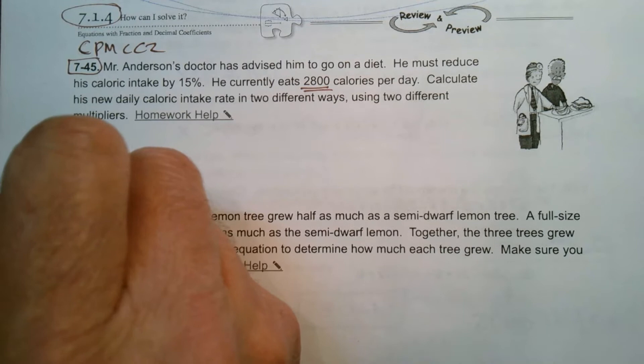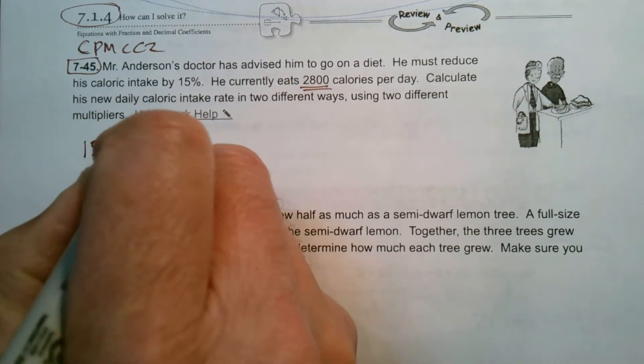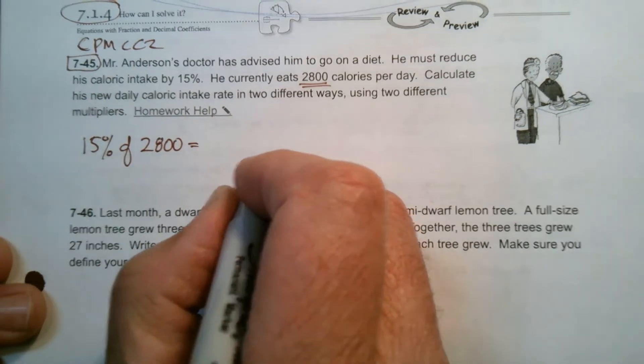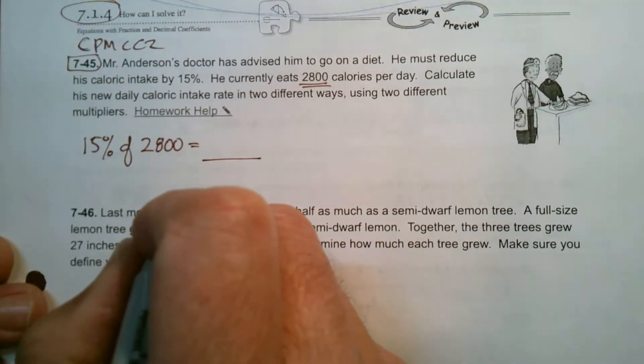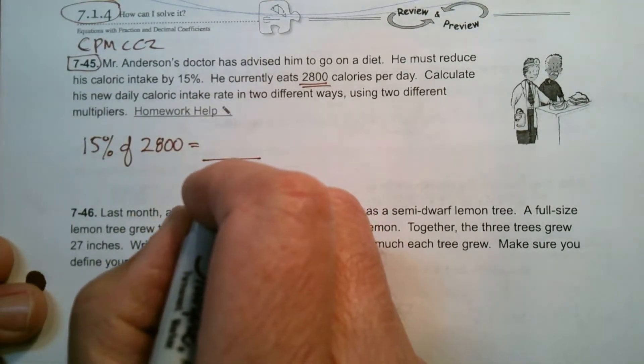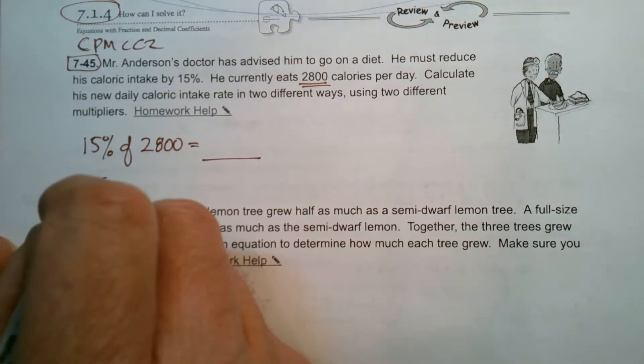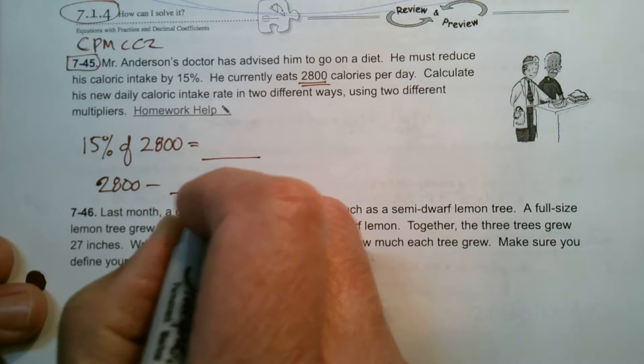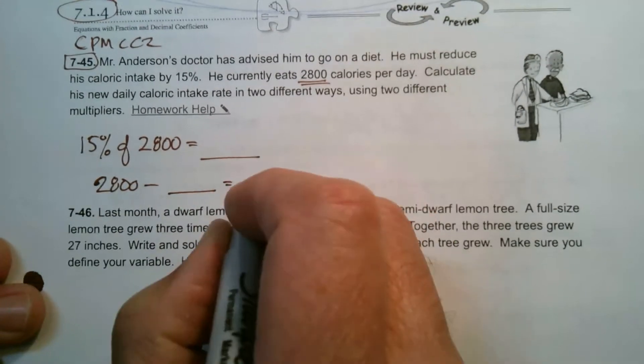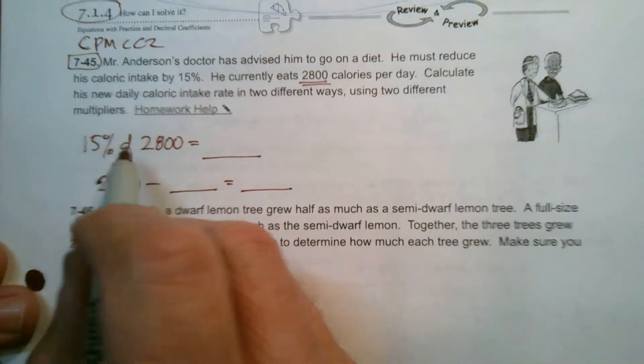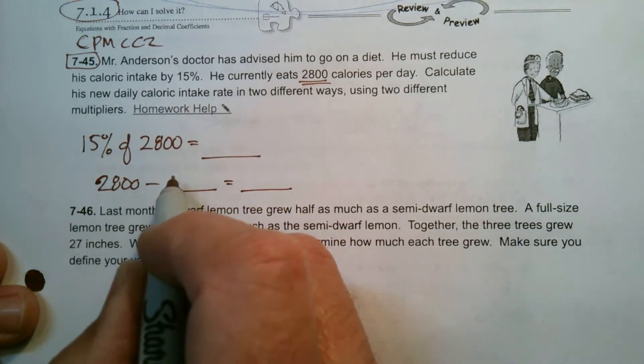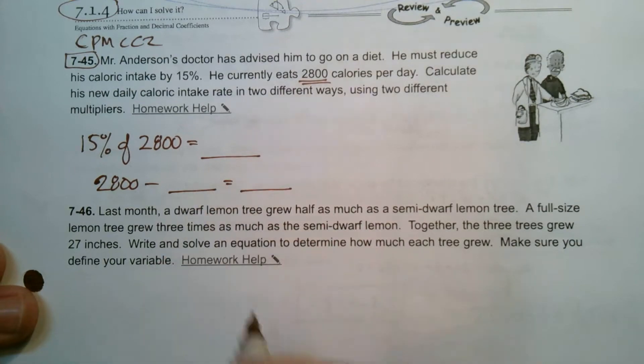So two things I can do. One would be to take 15% of 2,800, come up with that answer, whatever that's going to be. Then from there, take that and subtract it from 2,800, and that would be my answer. So it's take 15% of this, get that, then subtract it from 2,800, and that's going to be my new rate. That's one way.